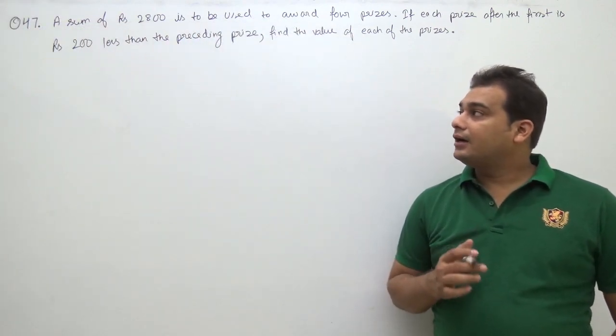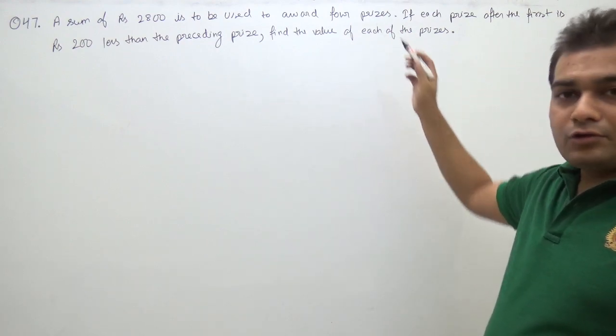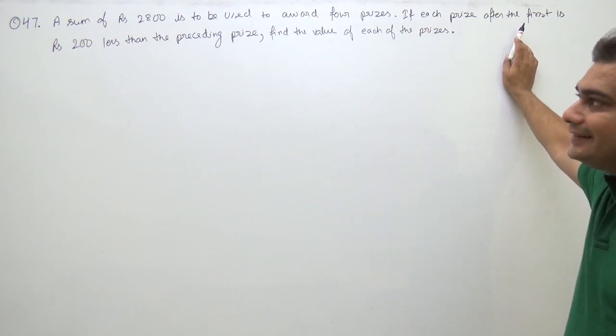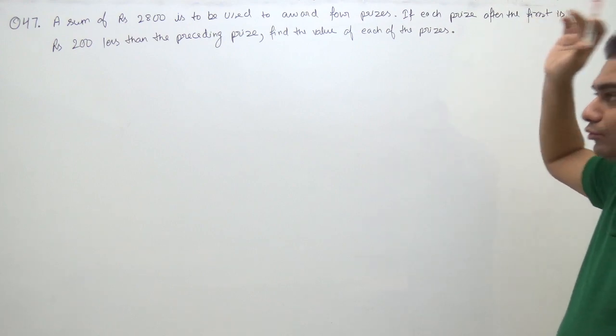Question number 47: A sum of Rs. 2800 is to be used to award four prizes. If each prize after the first is Rs. 200 less than the preceding prize, find the value of each of the prizes.